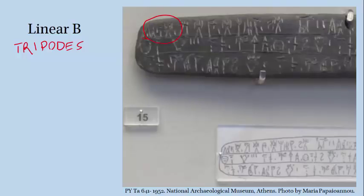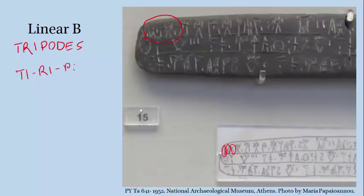This first symbol — it's hard to see on the tablet, but if we look down here at the reconstruction, we can see the first symbol which stands for 'ti.' The second symbol gives us 'ri,' and this third one is 'po.' And then we have this fourth one, which is 'de.'